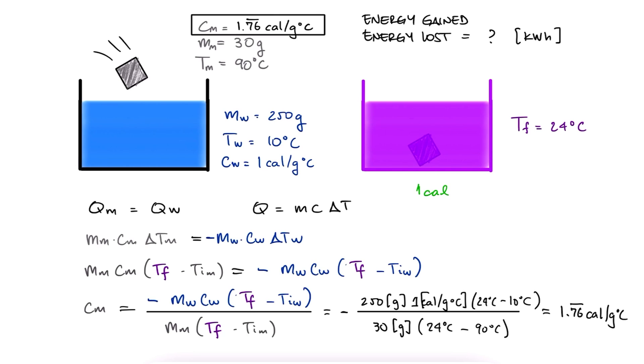Just a reminder here, a calorie with lowercase c is a gram calorie, which is 4.184 joules. The specific heat for this piece of metal can be written as 7.4 joules per gram degree Celsius, and this is the same as 7.4 kilojoules over kilogram degree Celsius.